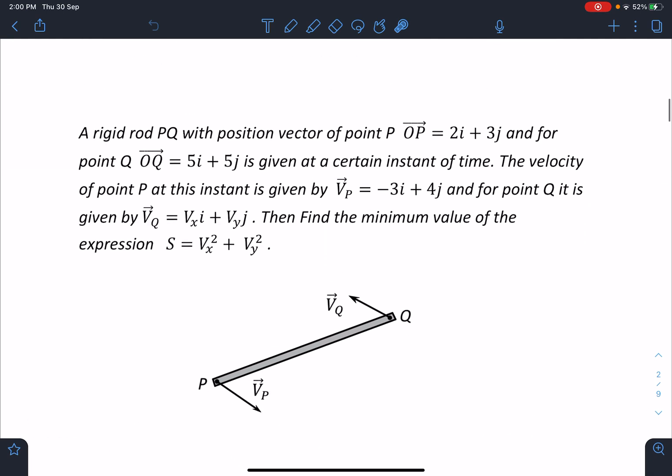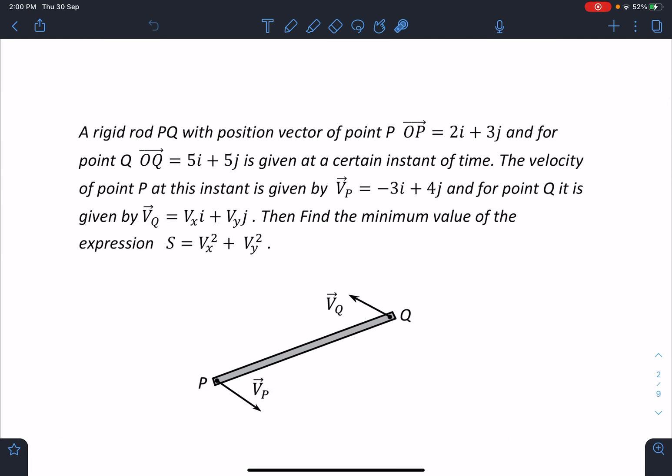Here is the problem statement. A rigid rod PQ with position vector of point P, OP = 2i + 3j, and for point Q, OQ = 5i + 5j is given at a certain instant of time. The velocity of point P at this instant is given by Vp = -3i + 4j and for point Q it is given by Vq = Vx i + Vy j. Then find the minimum value of the expression S = Vx² + Vy².